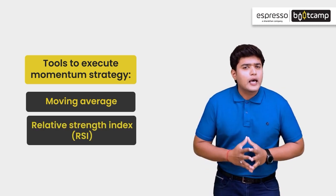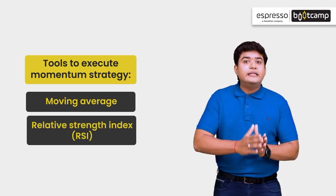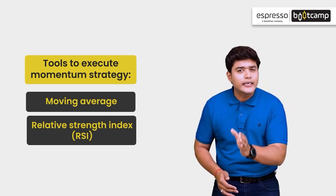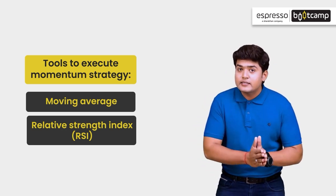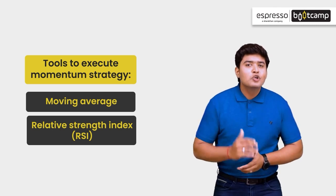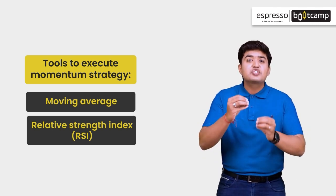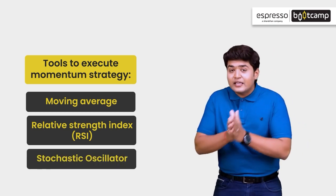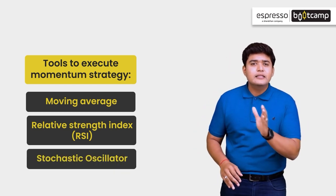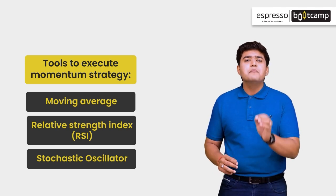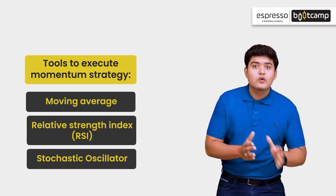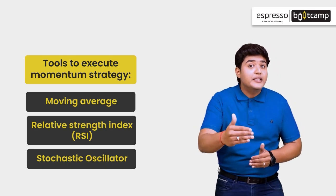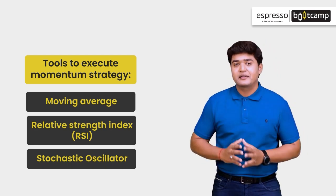Dusra hai RSI. RSI helps traders to predict the trend reversal. RSI is measured between 0 and 100. Kisibhi stock ke RSI 50 se zyada ho, to maana jata hai ki isme aachha upward momentum hai. The third is stochastic oscillator. RSI ki tarah, ye indicator bhi momentum par based hai. Ye kisibhi stock ki price ko historical price range se compare karke uske overbought ya oversold levels ko indicate karta hai.